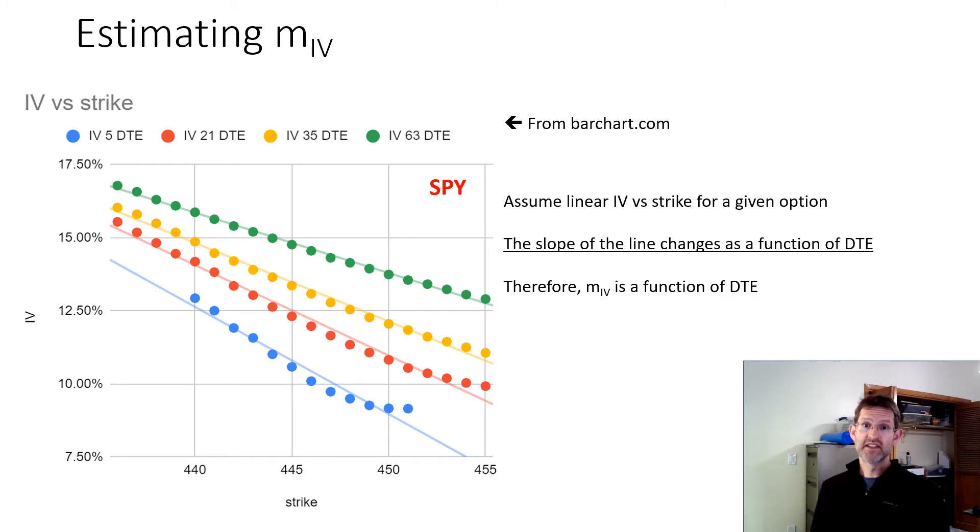The slope of that line is m_IV. However, you can see that the slope of the line changes with time. So therefore, m_IV is a function of time. It's not a constant. So it's a little bit complicated.